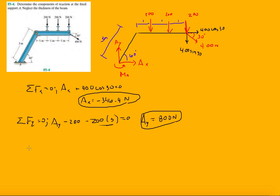And then last but not least, we have to find this moment. So we'll take a moment about point A. Moment about point A is equal to zero. Let's start off with the given moment at that point on the body.